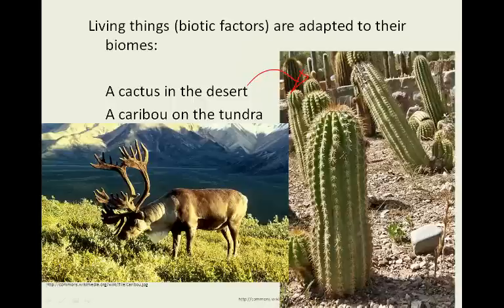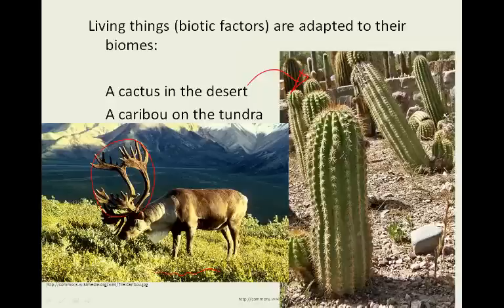A caribou is very well adapted to the tundra. It's got great antlers for foraging, so it can dig around through the snow and gather up any food it can find. It's got nice long legs so it can move through the brush, and a fair amount of fat and fairly thick fur, which it can grow thicker in the wintertime to withstand colder temperatures. You can see it here in what looks like more of an alpine region, but is probably just the tundra.